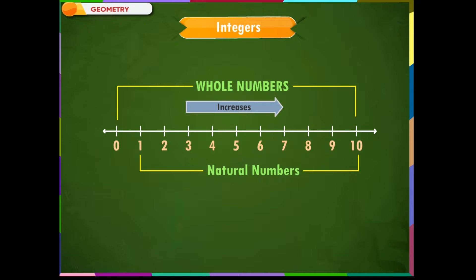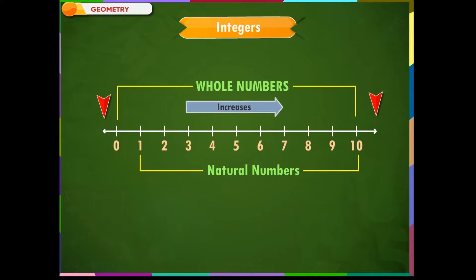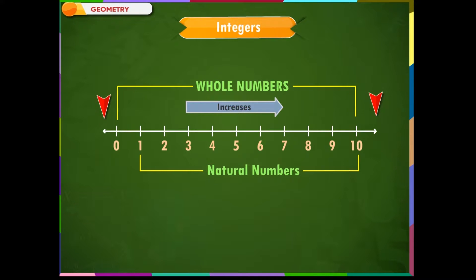Do you know that a number line has both directions — toward right and toward left? We see an arrow on the line which signifies that the number line continues to the left of 0. Thus, a number line moves towards the right with increasing numbers, and similarly, it also moves towards the left of 0.